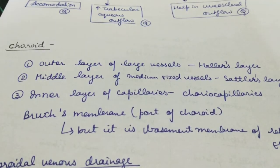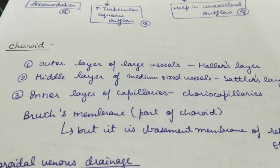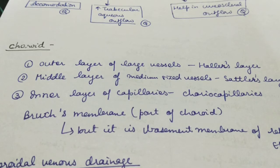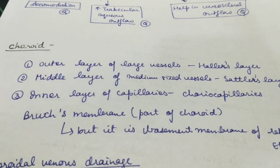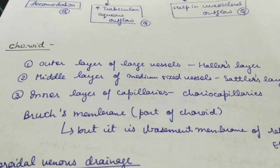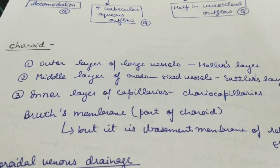There are three coats of the eyeball: the sclera, the choroid, and the retina. The choroid is the second layer and is the vascular layer of the eyeball, forming part of the uvea. The outer layer of large vessels in the choroid is known as Haller's layer, the middle layer of medium-sized vessels is known as Sattler's layer, and the inner layer of capillaries is known as the choriocapillaris. Then there is Bruch's membrane, which is also part of the choroid but is actually the basement membrane of the retinal pigment epithelium.